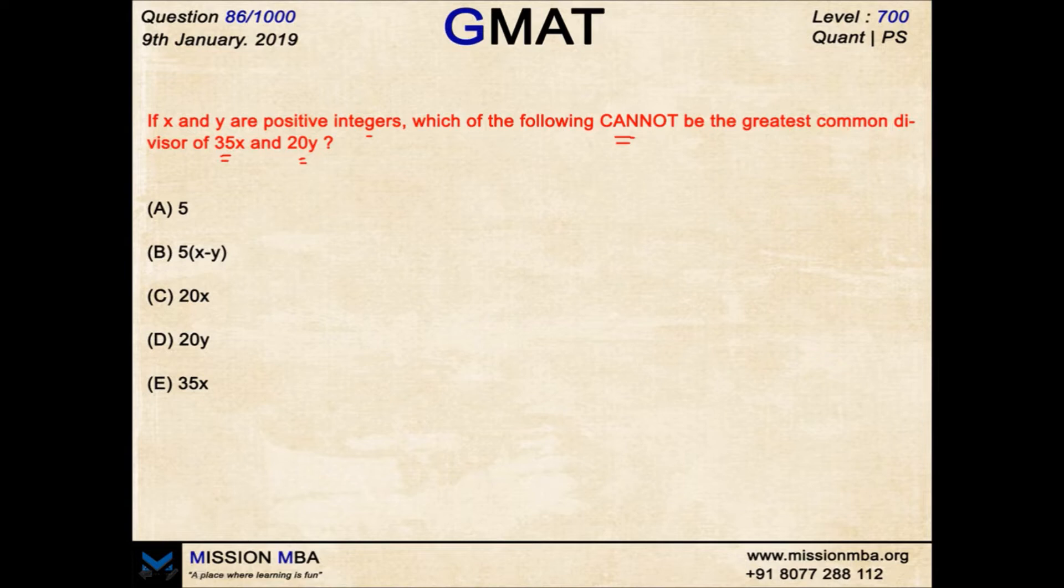Always the better option is to eliminate the four options and reach the correct one. So he's asking me to find out the greatest common divisor of 35X and 20Y. Let's take out the maximum number common before putting into X and Y. Clearly, I can take out a 5 common and I'm left with 7X and 4Y.